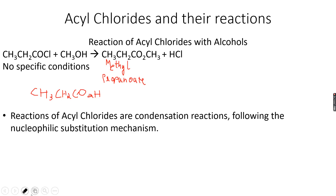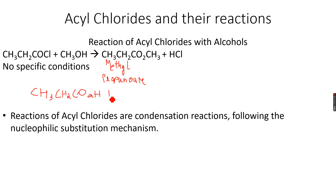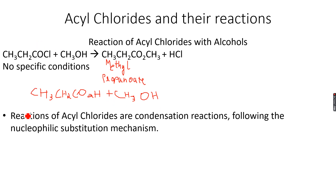We can react propanoic acid with methanol, and when we do this reaction we get the same ester, methyl propanoate. So why carry out the reaction with acyl chlorides if we are getting the same ester with the carboxylic acid?